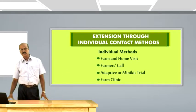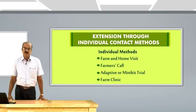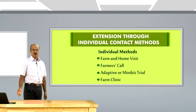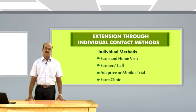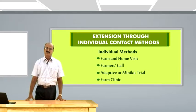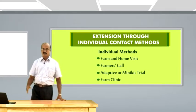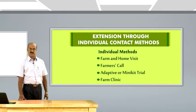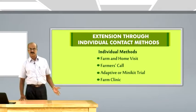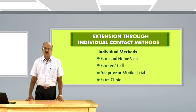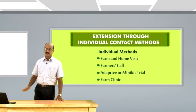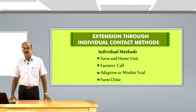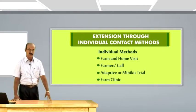Another individual contact method is a farmer's call. The clients or farmers want to clarify or get some information or certain ideas from the extension worker. They may call the extension worker either at his office or at the place where the extension worker is available, and the extension worker accordingly passes on the information to address the farmer's call.